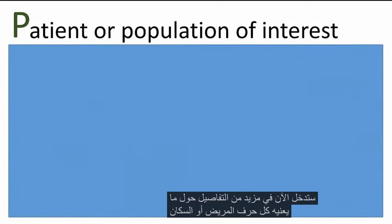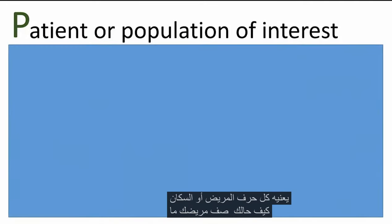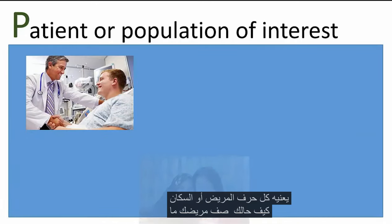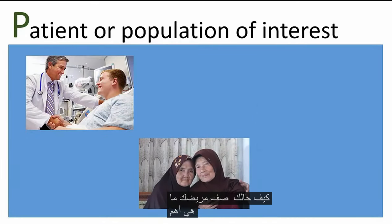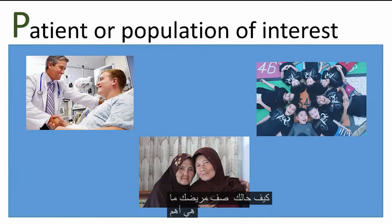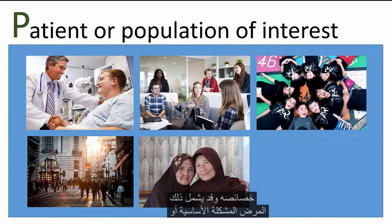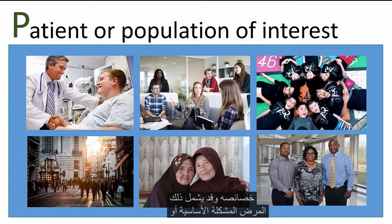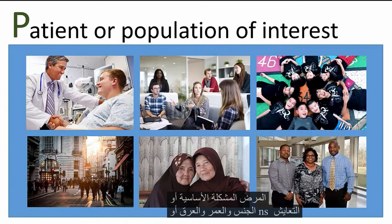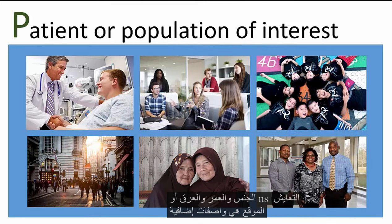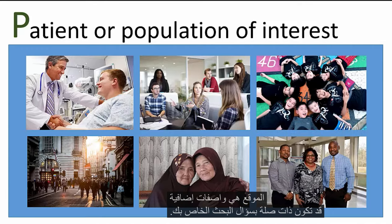Patient or population: how would you describe your patient? What are the most important characteristics of the patient? This may include the primary problem, disease, or coexisting conditions. Gender, age, ethnicity, or location are additional descriptors that may be relevant to your research question.